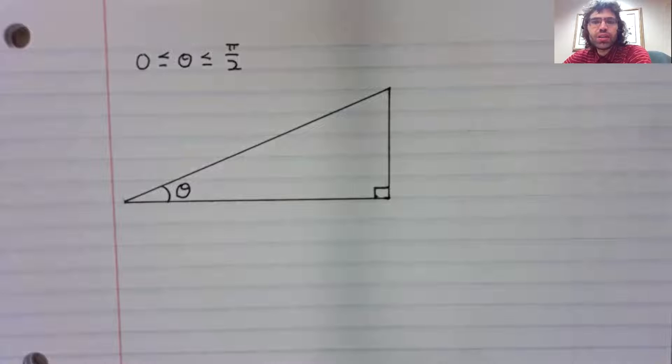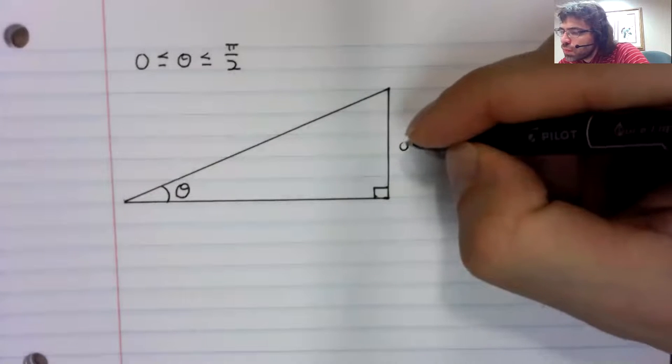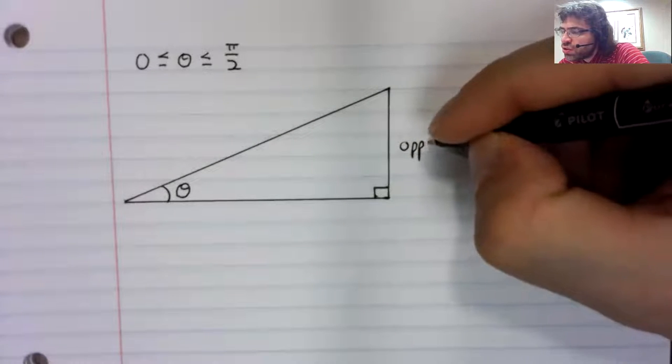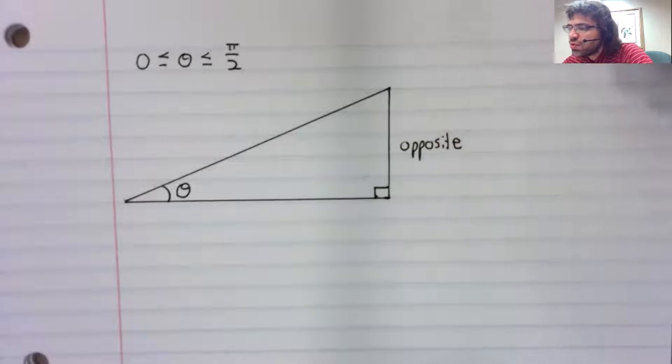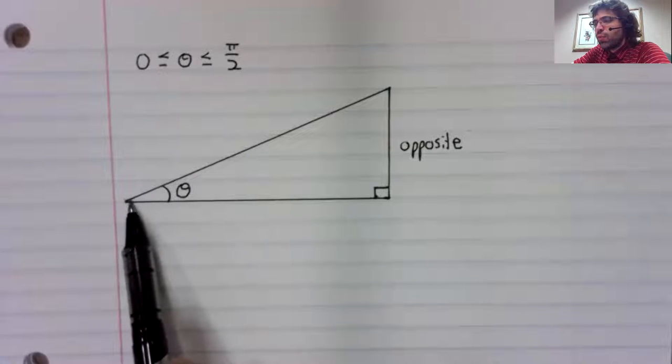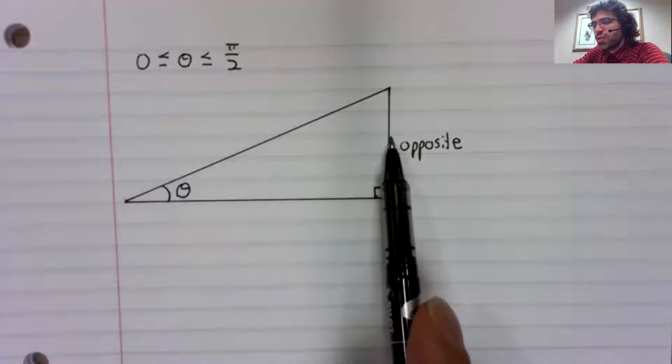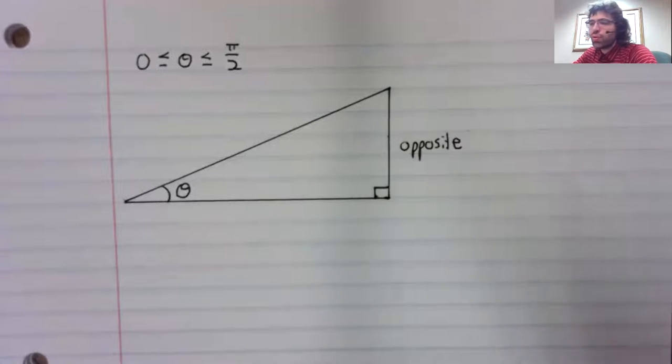That has to be true. Let's label the sides of this triangle. We'll call this side the opposite side, because here's the angle, and opposite of it is this side of the triangle.